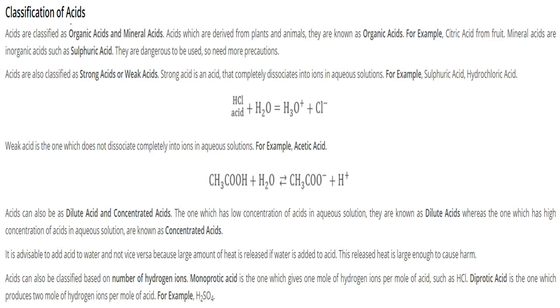We can classify acids like organic acids or mineral acids. Those acids which are derived from plants and animals are known as organic acids. For example, citric acid from fruit like oranges and lemons.